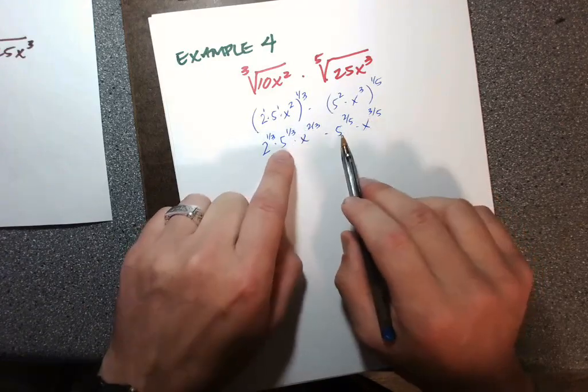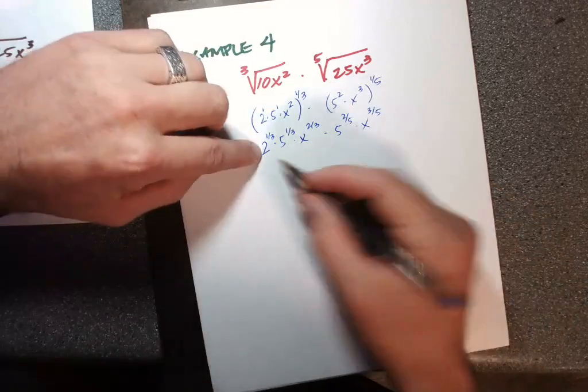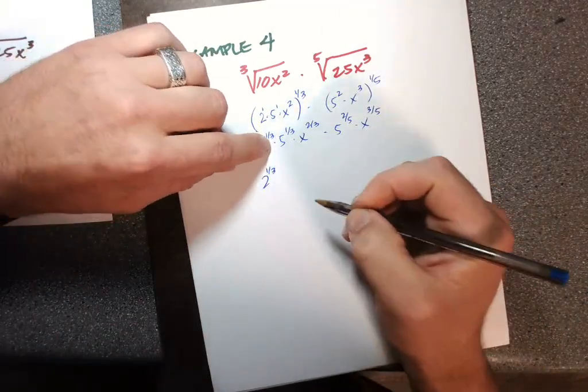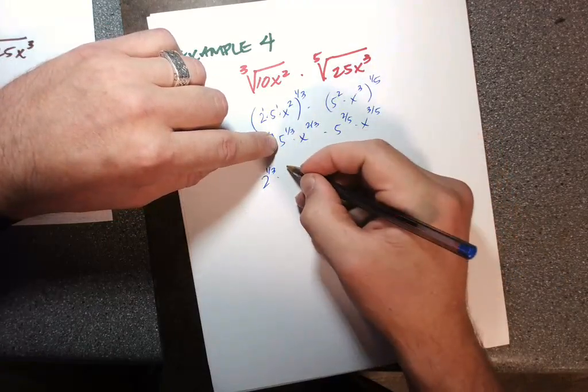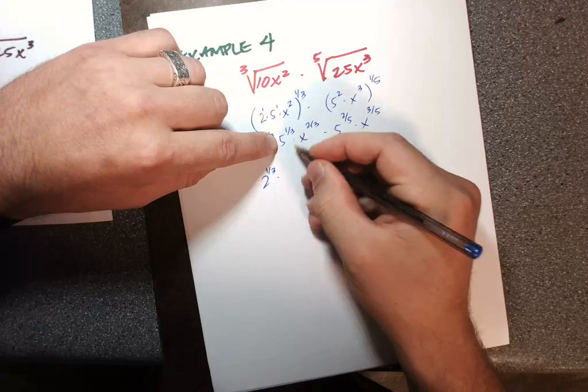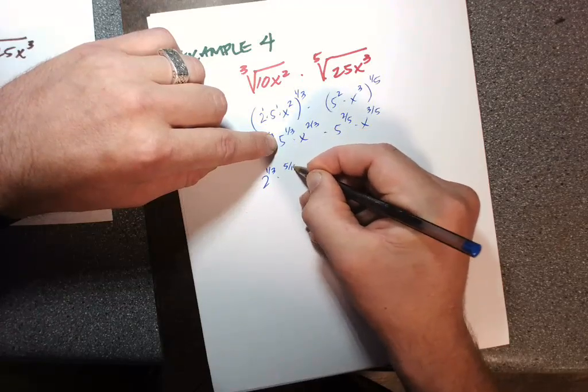Same with the fives. The 2 can be left alone: one-third. Common denominator is fifteenths, so we're going to multiply that by 5: five-fifteenths.